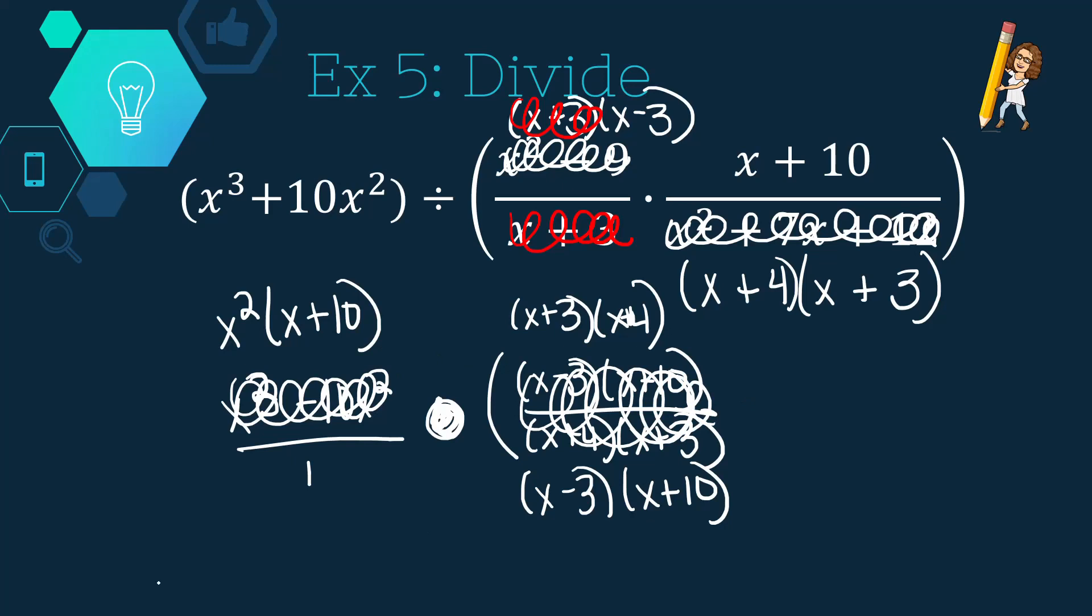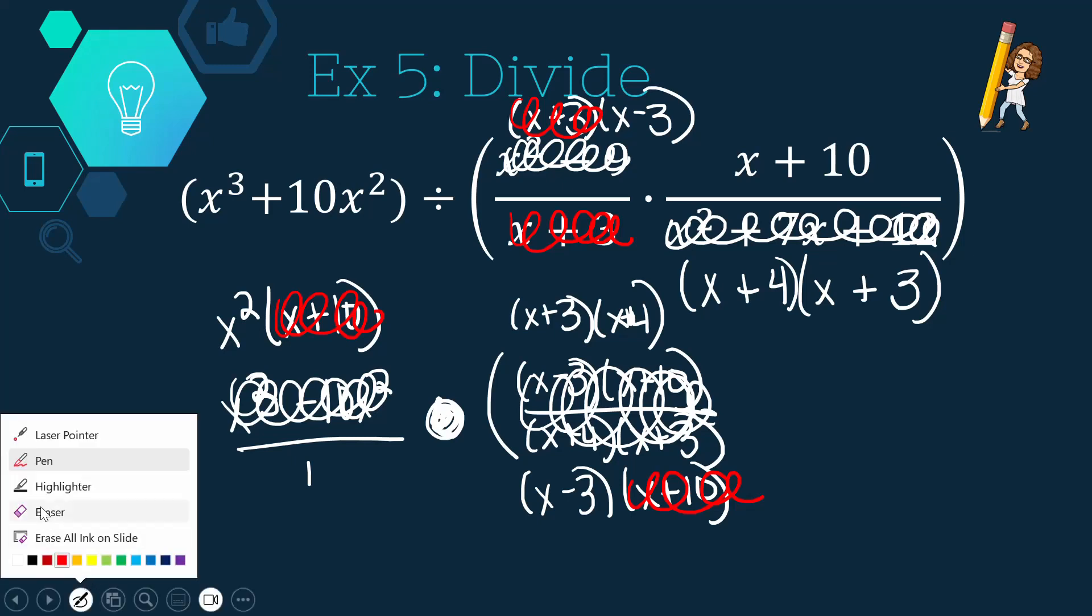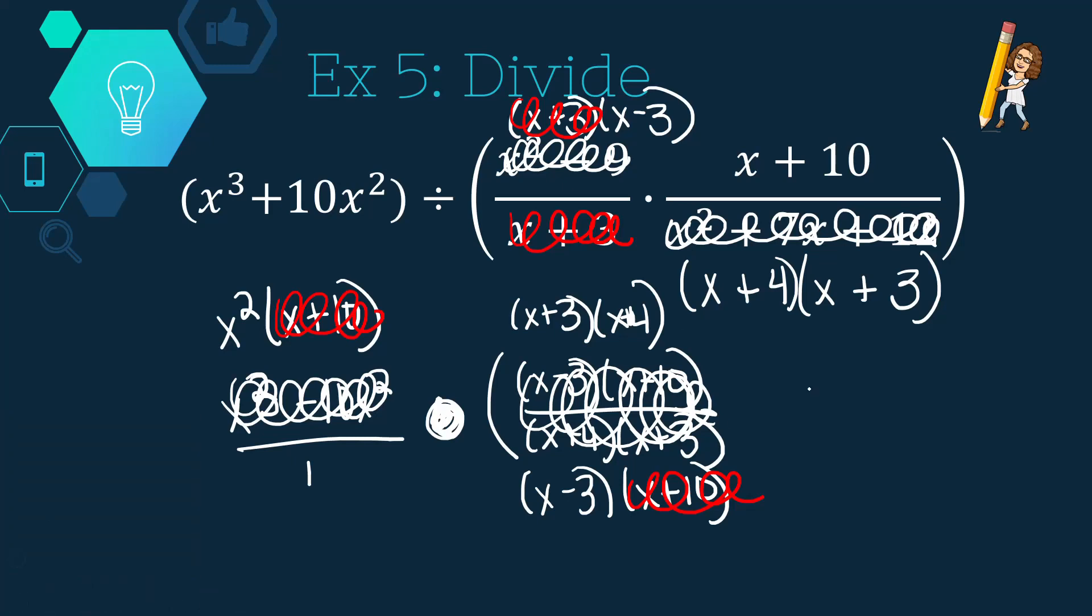Now, I'm now able to cross cancel once again. So, x plus 10s are going to cancel out. And I think that's the final answer. So, I'm going to have left on the numerator an x squared, an x plus 3, an x plus 4, over an x minus 3. Disgusting? Yep. Is it the simplified answer? Indeed, it is. Nothing else can simplify.